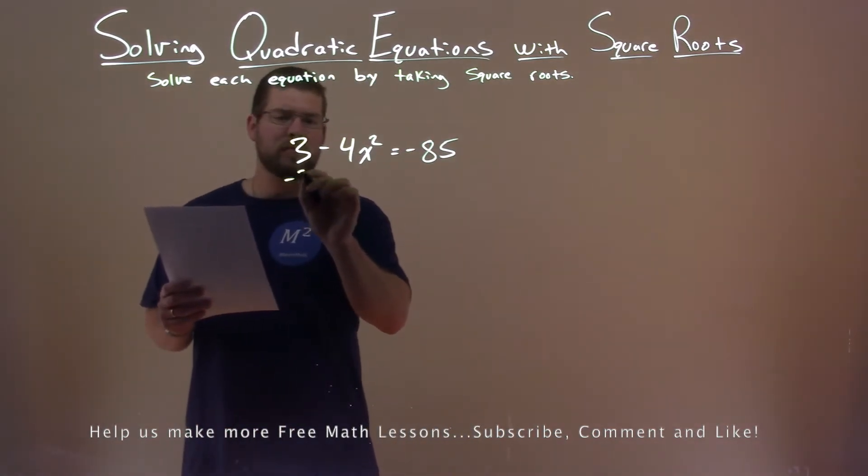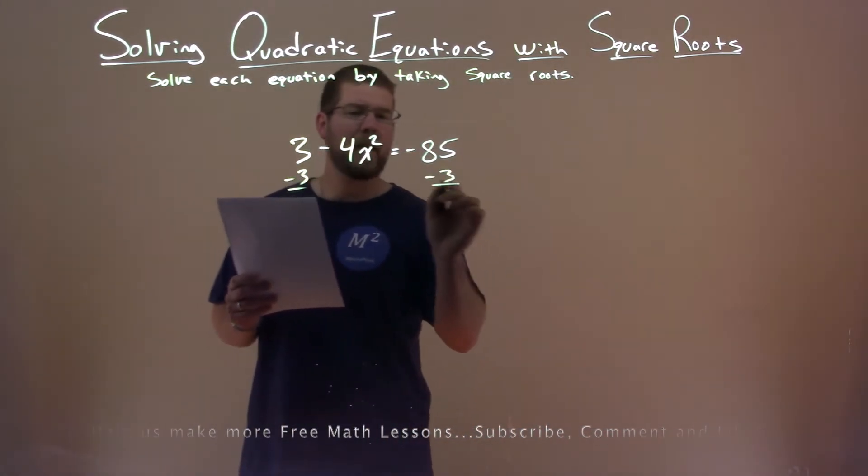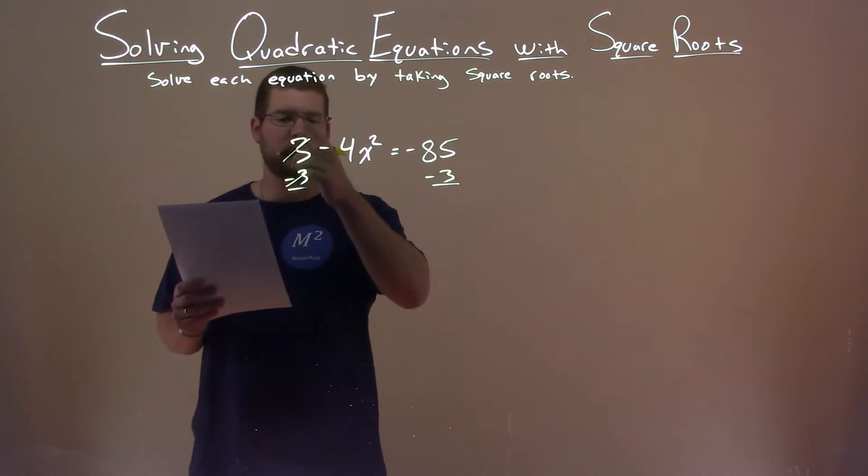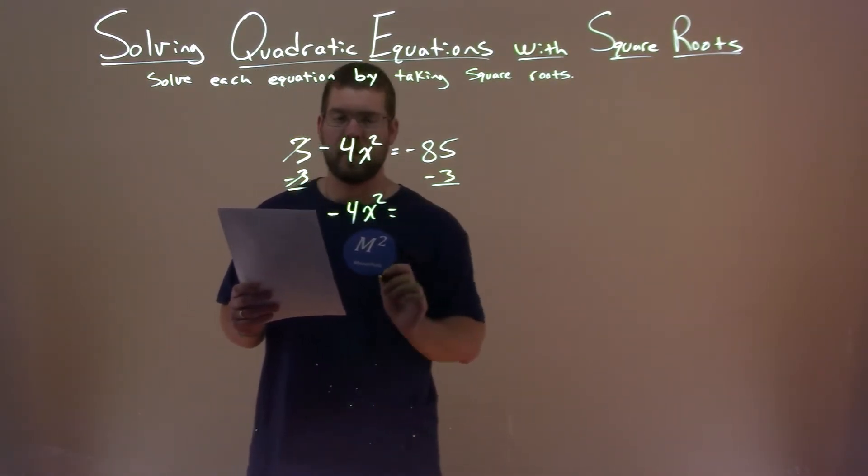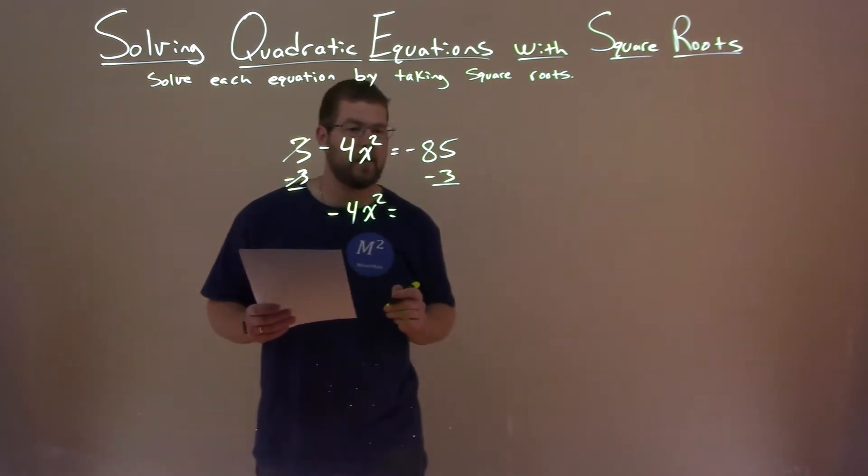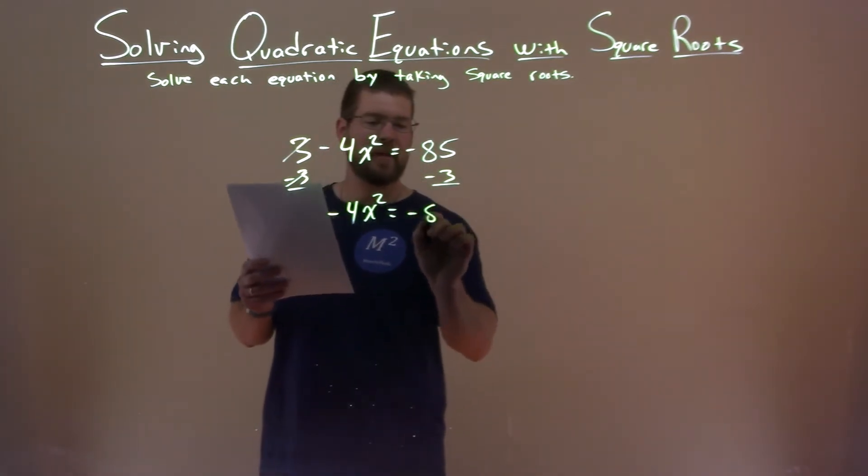First thing I want to do is subtract the 3 from both sides. That helps me get x squared by itself. The 3s cancel on the left, and we have minus 4x squared here on the left. Negative 85 minus 3 is negative 88.